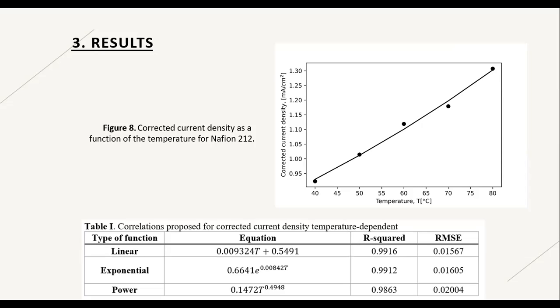Based on the experiment data, three correlations were proposed to describe and quantify the corrected current density as a function of the temperature. The correlations are shown in table 1. For the election of the best model, the parameters of R-squared and RMSE were analyzed. Following this criteria, the model that best describes the data trend is the linear function.